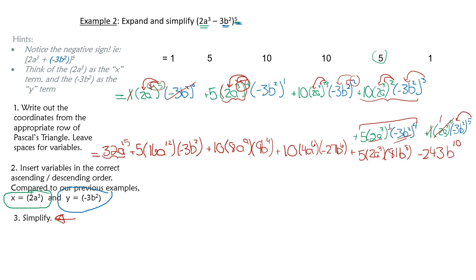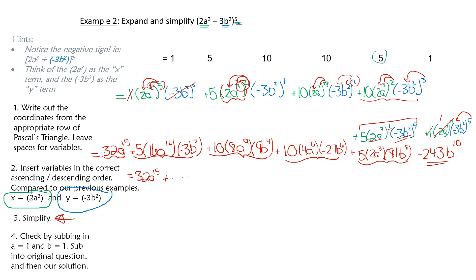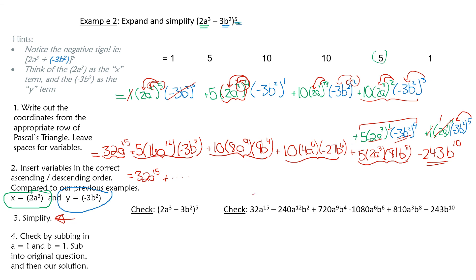The first term is done: 32a to the 15. Now collect each term by multiplying all the pieces together. Press pause, collect all of the terms, and then come back to see if you got the right answer. The full simplified answer is shown here — this is your answer, so check and see if you got the same thing.